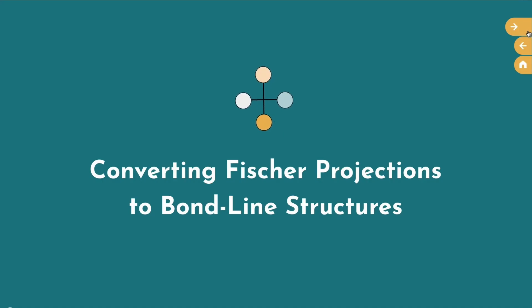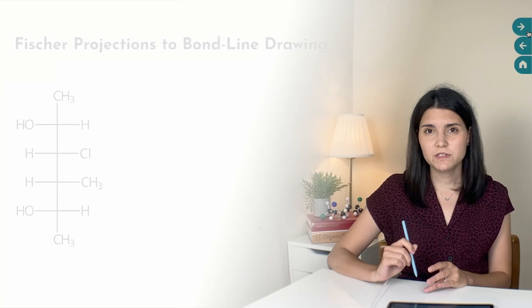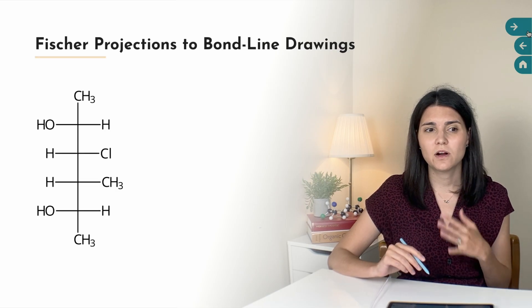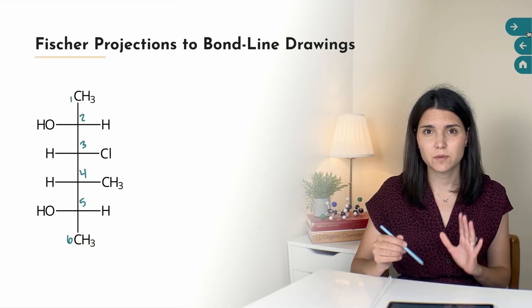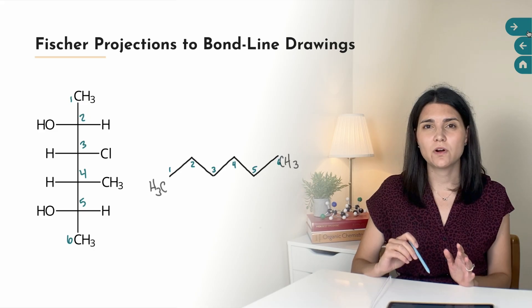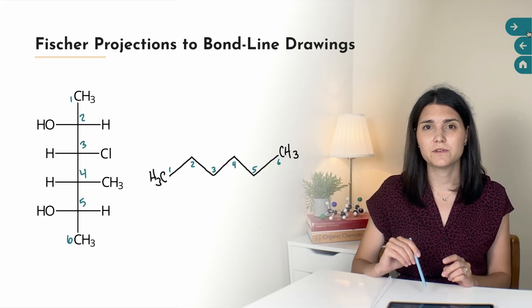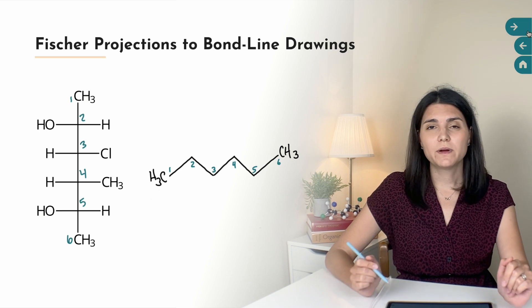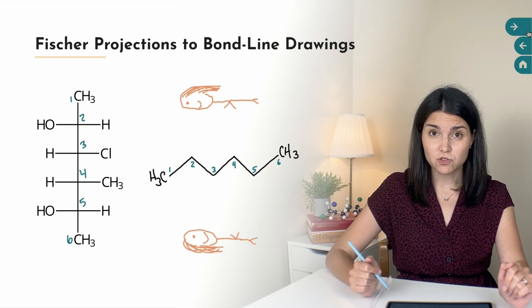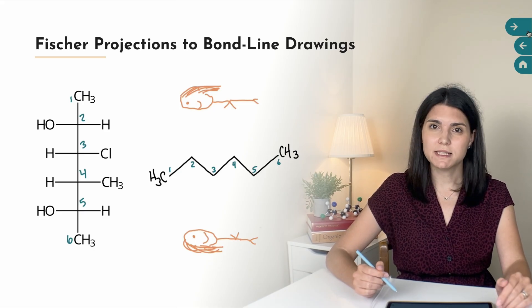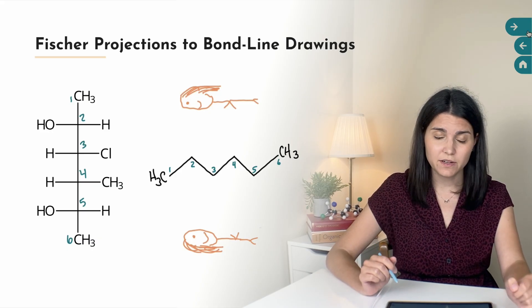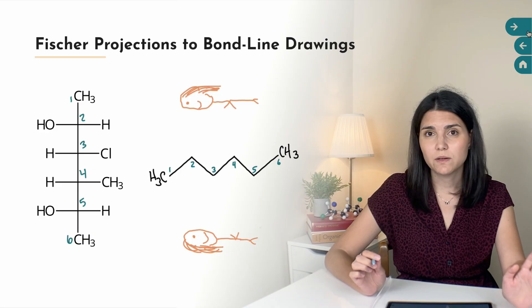Sometimes the Fischer projection just doesn't work for whatever problem you're trying to solve, and you'd rather see it as a bond line drawing or skeletal structure. Here is how you would convert it. First, count the atoms in the main carbon chain of your Fischer projection, then draw the same number of carbon atoms in a zigzag skeleton for your bond line drawing. Draw in the top group and the bottom group at either end of your skeletal structure. Then draw a tiny picture of yourself floating above the bond line drawing with your head pointing toward the group on top, and also a tiny picture laying below the molecule, head in the same direction.